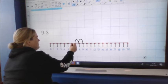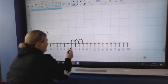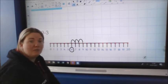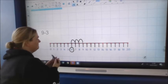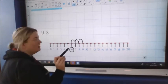Nine take away three. One, two, three. What number did I land on? Six. Well done. Now, it's really important when we're jumping down that number line that we just jump to the next dot.